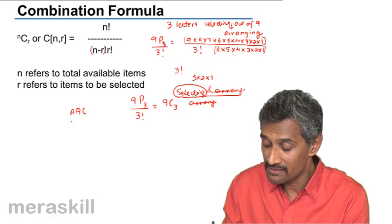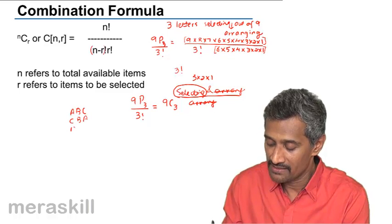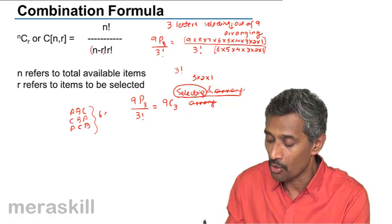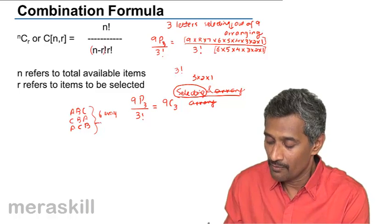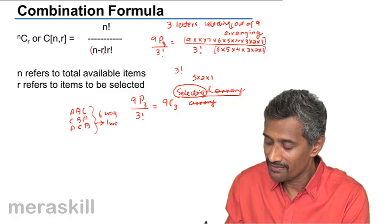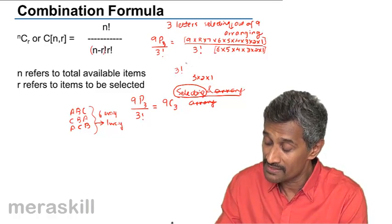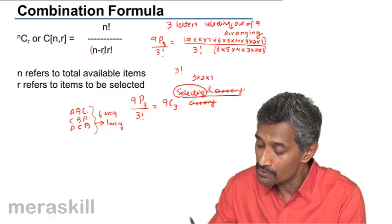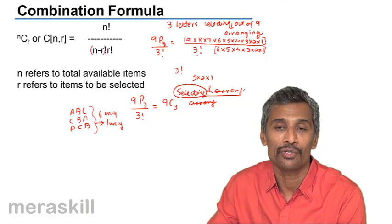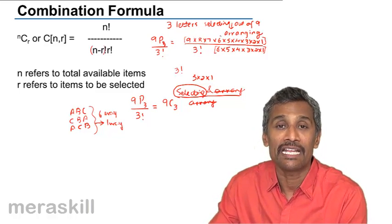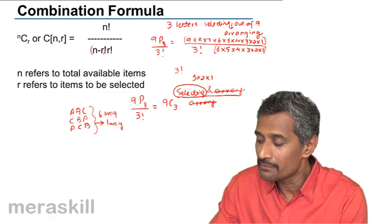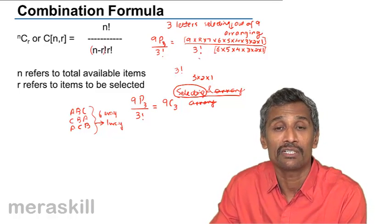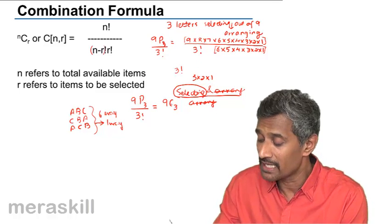These three letters can be arranged in six different ways — ABC, CBA, ACB, and so on. So suppose you've picked up these three letters, there are six ways in which you have arranged them. But all these six ways, ultimately, if the order is not important, it is only one way. So when you divide by 3 factorial, all the different arrangements of the same three letters will ultimately lead to only one selection — which is a combination.